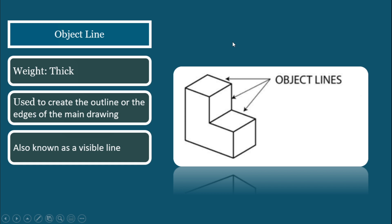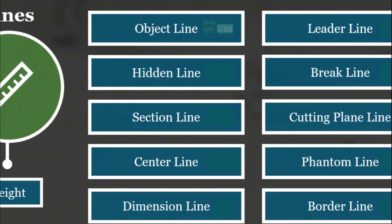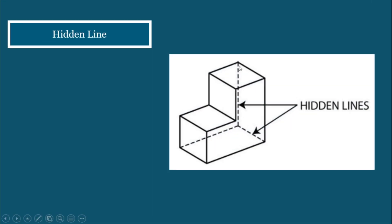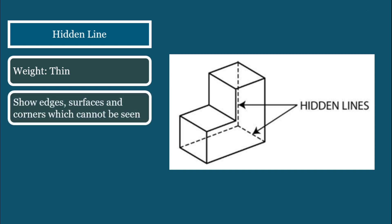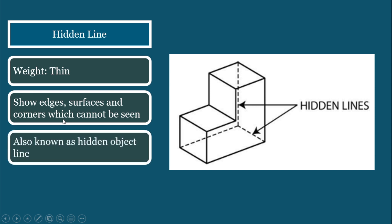These lines are thin. If 0.75 millimeters is the thickness for visible lines, 0.4 to 0.5 millimeters thickness is for hidden lines. The purpose of hidden lines, as the name suggests, is to show the edges, surfaces, and corners which cannot be seen. It is also known as a hidden object line — in other words, it is an object line that is hidden. It is a line made of short dashes, about 1 and 1/8 inch long, with a 1/16 inch gap.